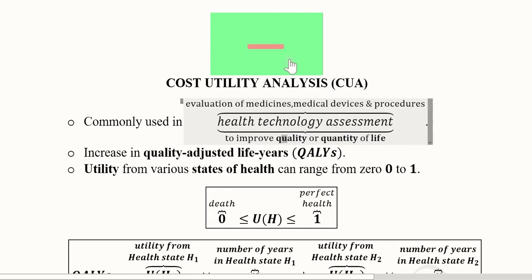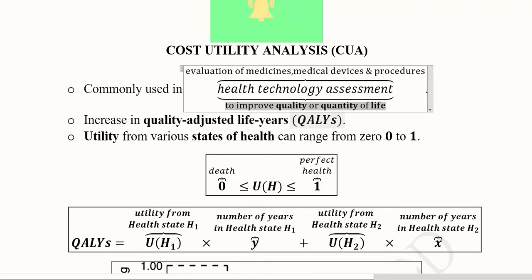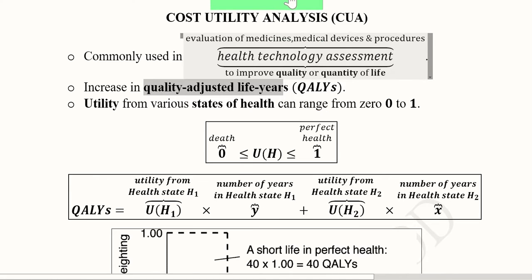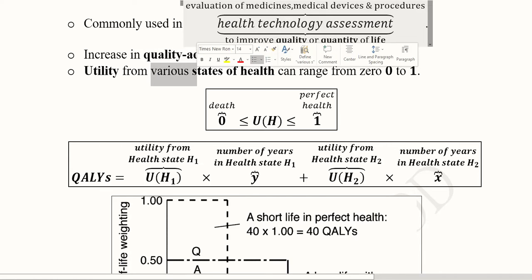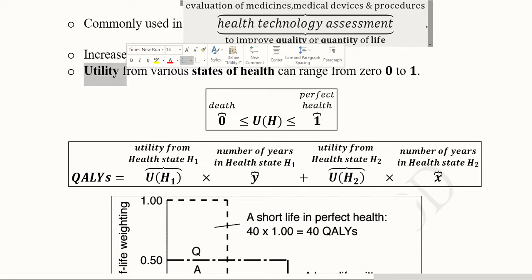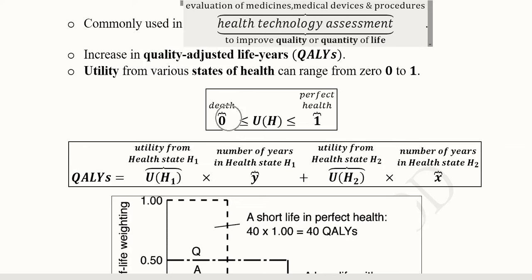What we do is incorporate the quality and quantity of life. This dual approach allows us to assess quality of life as well as quantity at the same time. When we incorporate both of these it becomes QALY, which stands for Quality Adjusted Life Years. When it comes to quality of life, it is basically the utility from life. Health can be in various states, and this utility can range from 0 to 1.